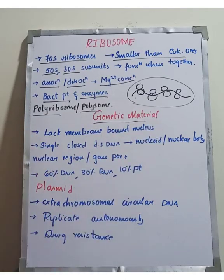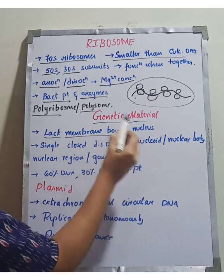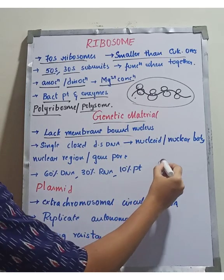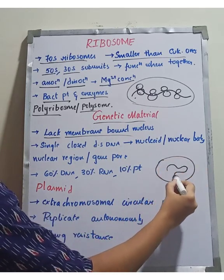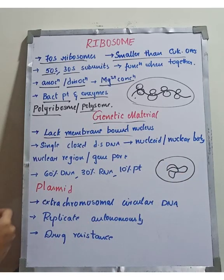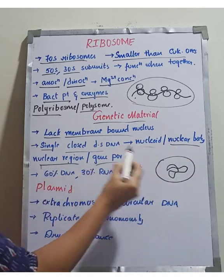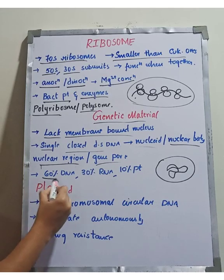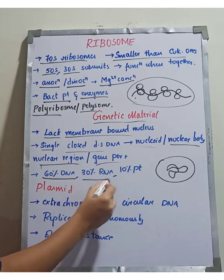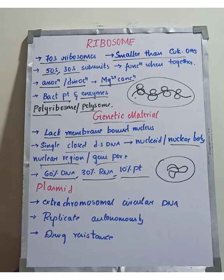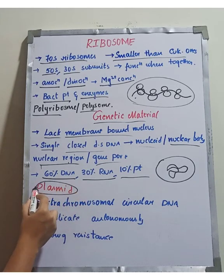Next is the bacterial genetic material. Bacteria lack a membrane-bound nucleus. The genetic material is located in the cytoplasm without a membrane. It is single, closed, and double-stranded DNA. It is called the nucleoid, nuclear body, or nuclear region. This genetic material contains 60% DNA, 30% RNA, and 6% protein. Another component is the plasmid.